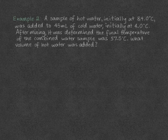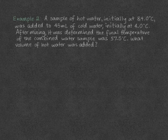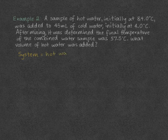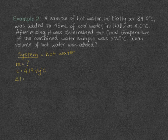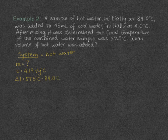In our second example, we're going to look at two solutions. A sample of hot water, initially at 84 degrees Celsius, was added to 45 milliliters of cold water, initially at 4 degrees Celsius. After mixing, the final temperature of the combined water sample was 57.5 degrees Celsius. What volume of hot water was added? We assign our system as the hot water. We don't know its mass, but its specific heat capacity is 4.19 joules per gram degrees Celsius, and its temperature change is 57.5 minus 84, giving negative 26.5 degrees Celsius.